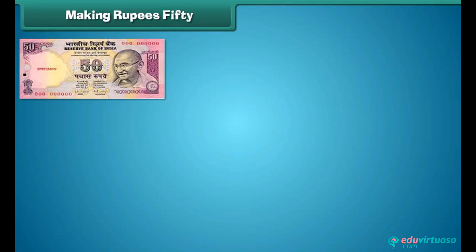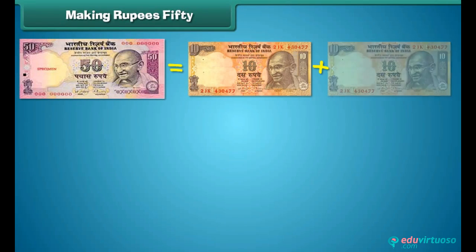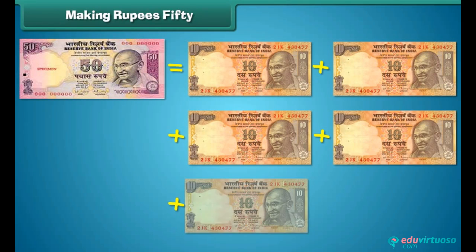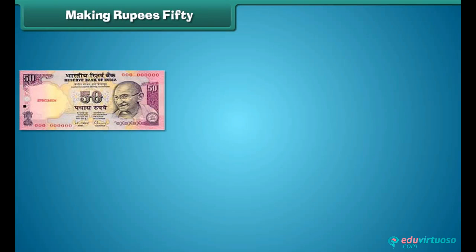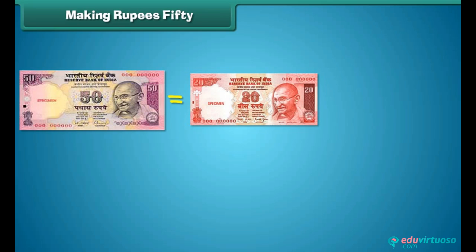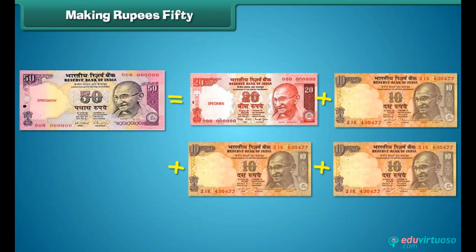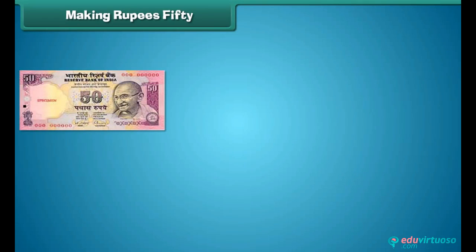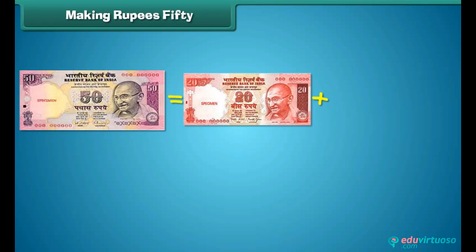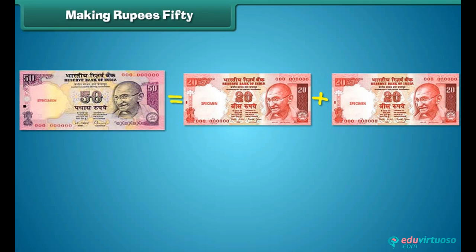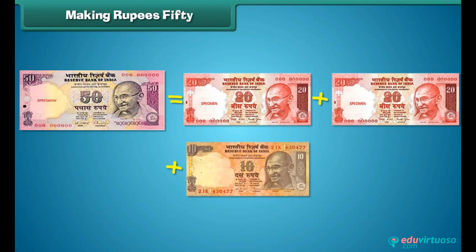Similarly, a 50 rupees note is equal to the sum of 5 ten-rupee notes. A 50 rupees note is equal to the sum of 1 twenty-rupee note and 3 ten-rupee notes. A 50 rupees note is also equal to the sum of 2 twenty-rupee notes and 1 ten-rupee note.